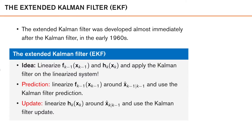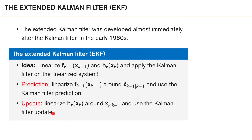For the update step, we basically do the same thing. We linearize h_k of x_k, but as the measurement model is a function of x_k, we use our predicted estimate x̂_{k|k-1} as a linearization point, and then use the Kalman filter update with this linearized model.